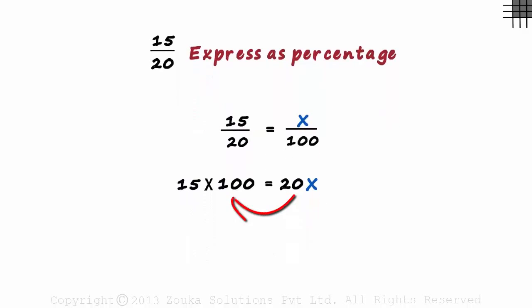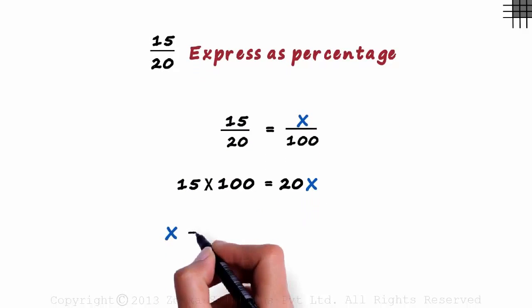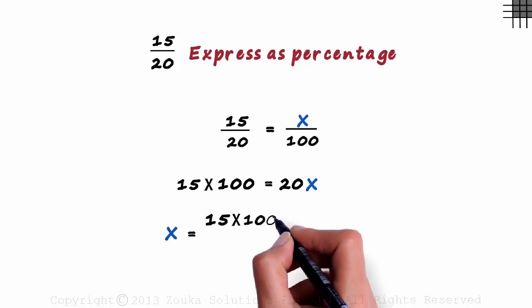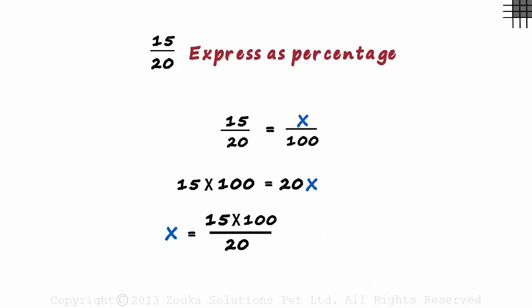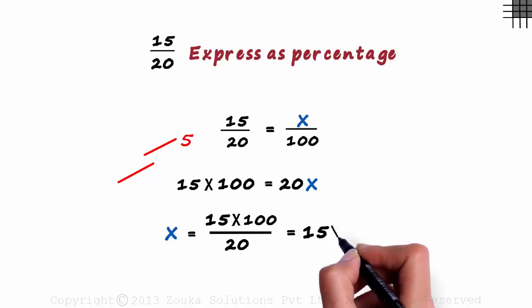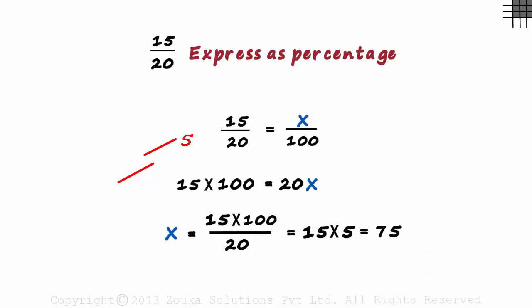Transposing 20 to the other side, we write X as 15 multiplied by 100 divided by 20. 100 divided by 20 is 5 and hence X is equal to 15 multiplied by 5 which equals 75.